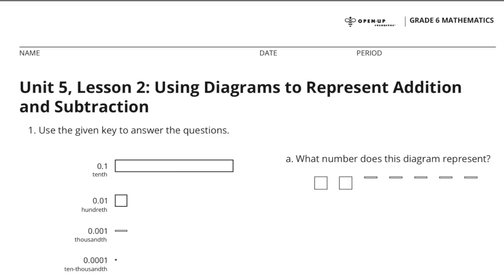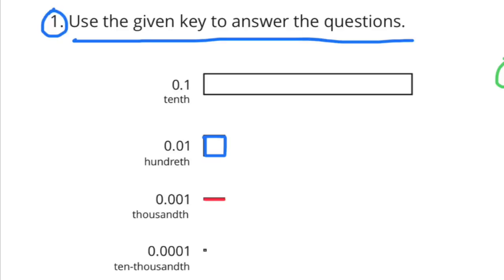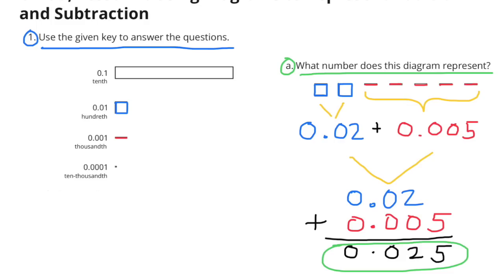Unit 5 Lesson 2: Using Diagrams to Represent Addition and Subtraction. Use the given key to answer the questions. A. What number does this diagram represent?